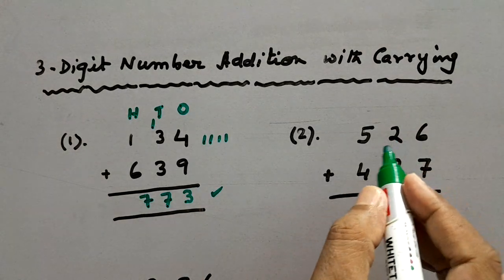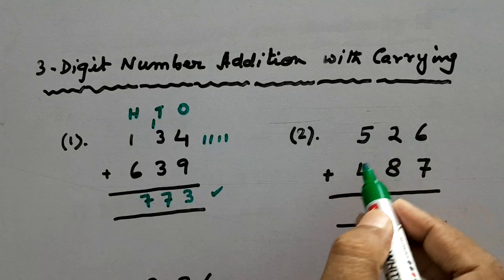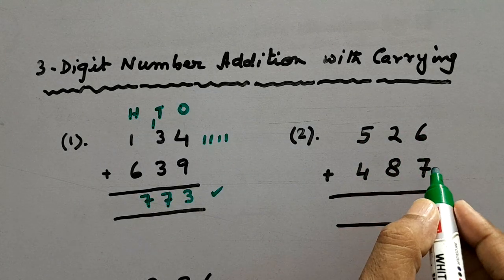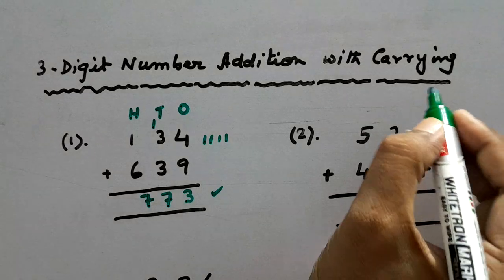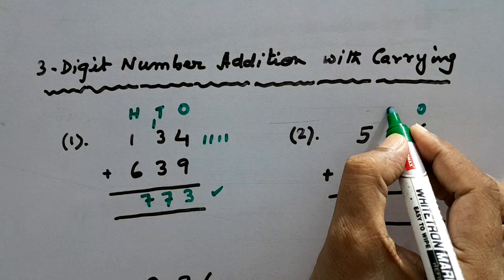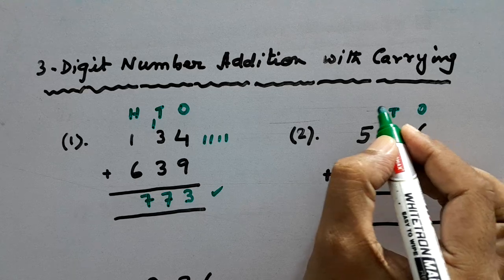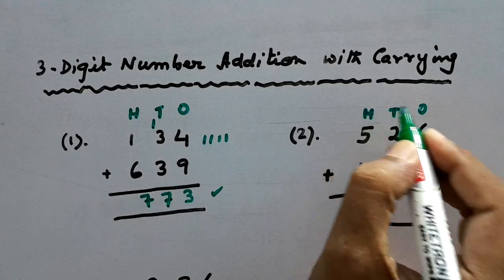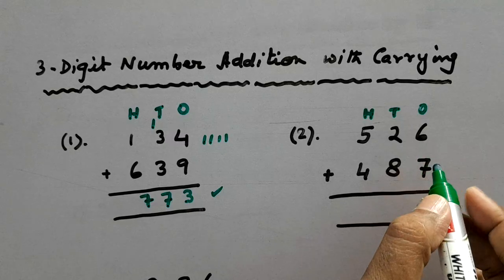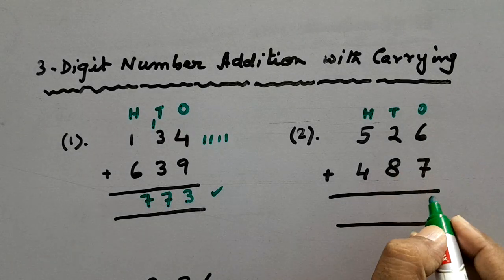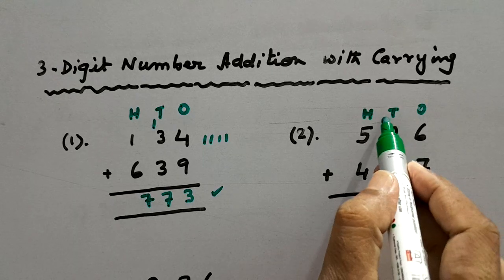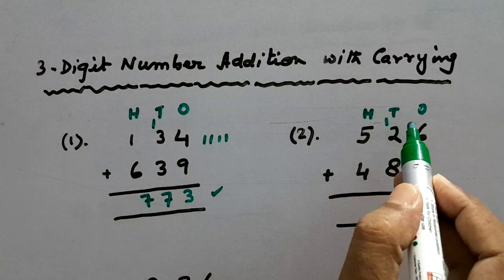Here we have taken 526, and we'll be adding 487. In the same way we'll write ones, tens and hundreds. So here 7 plus 6 equals 13. We'll write 3 here and carry one in the tens column.